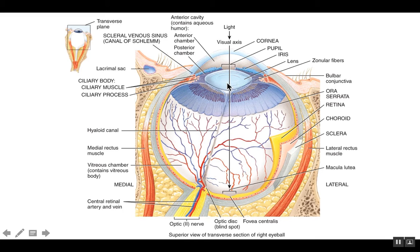The ciliary process is going to produce aqueous humor, which is secreted from the process and circulates within the anterior cavity. That aqueous humor actually has to then drain through a little drainage canal called the scleral venous sinus, or canal of Schlem. So aqueous humor is continuously produced and then drained out.